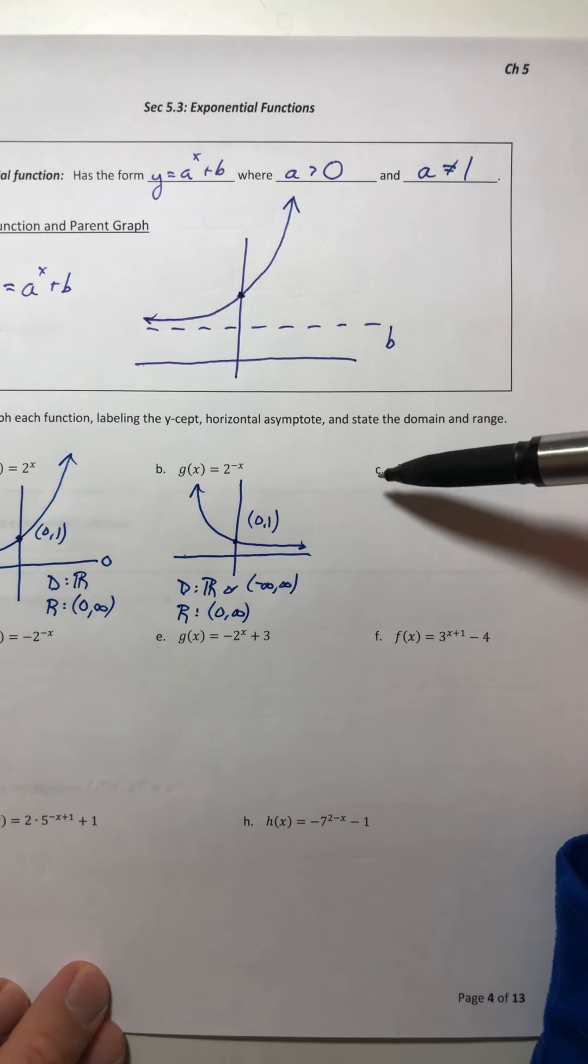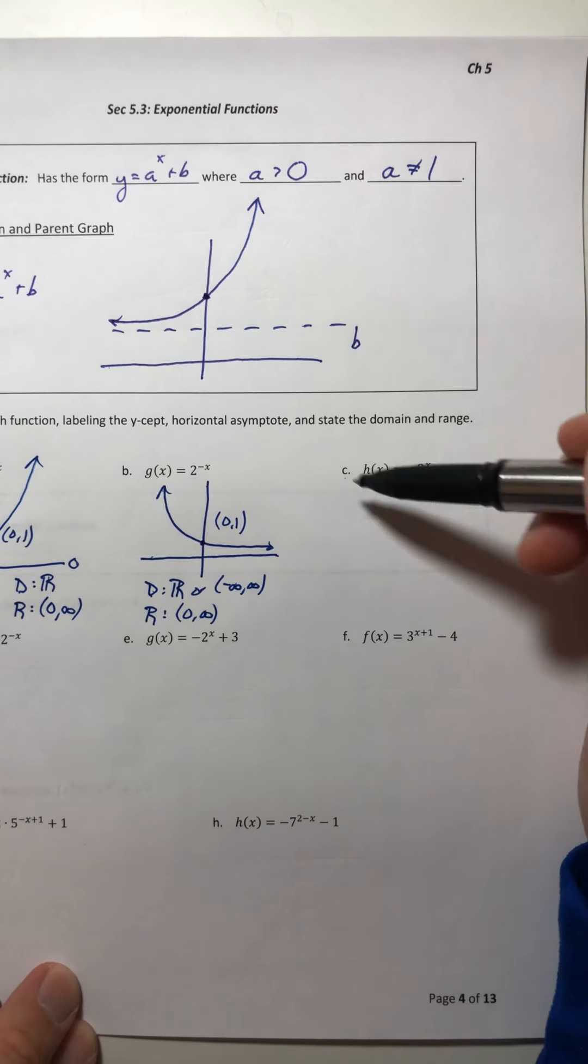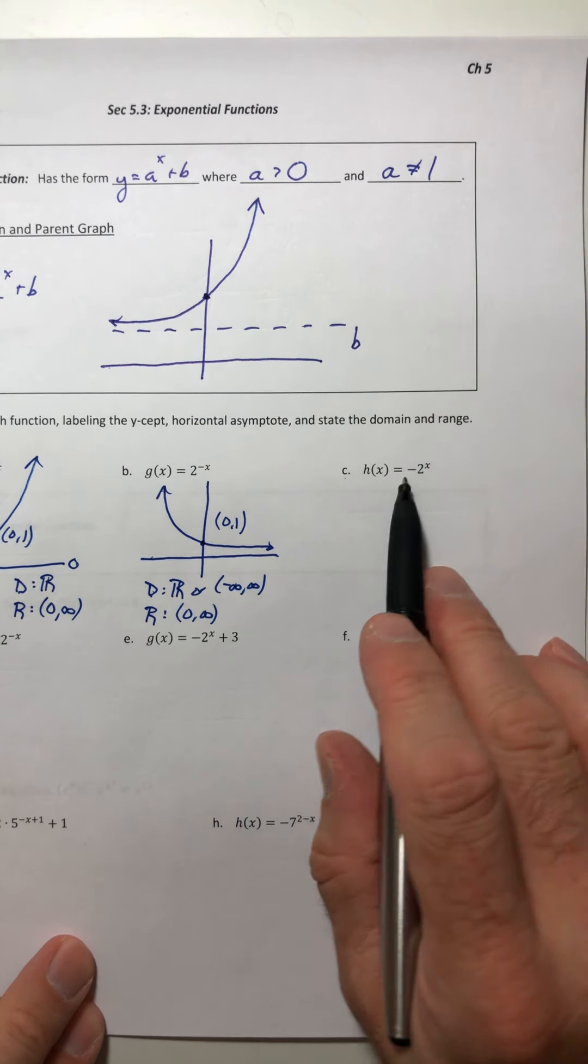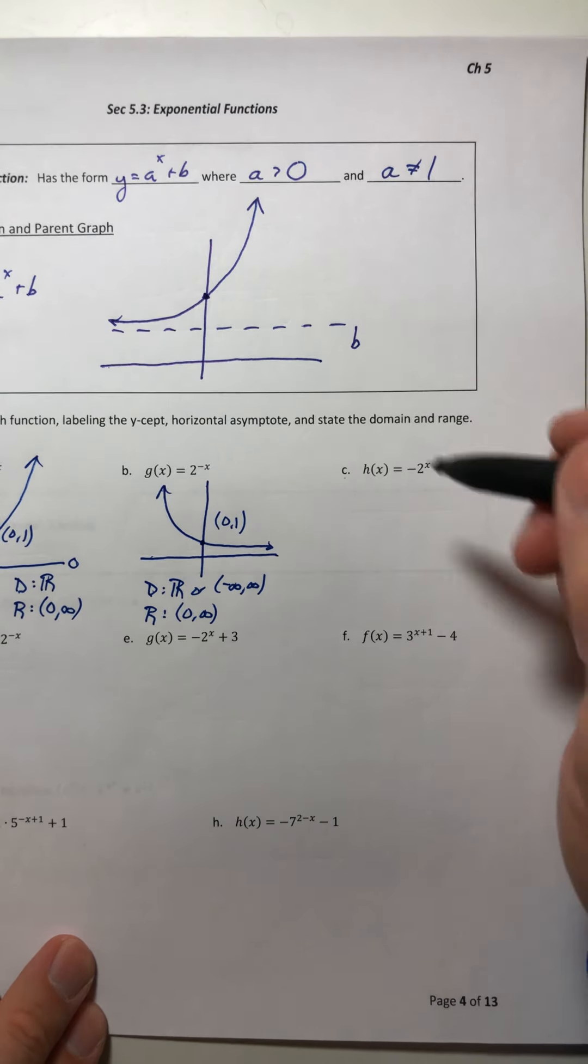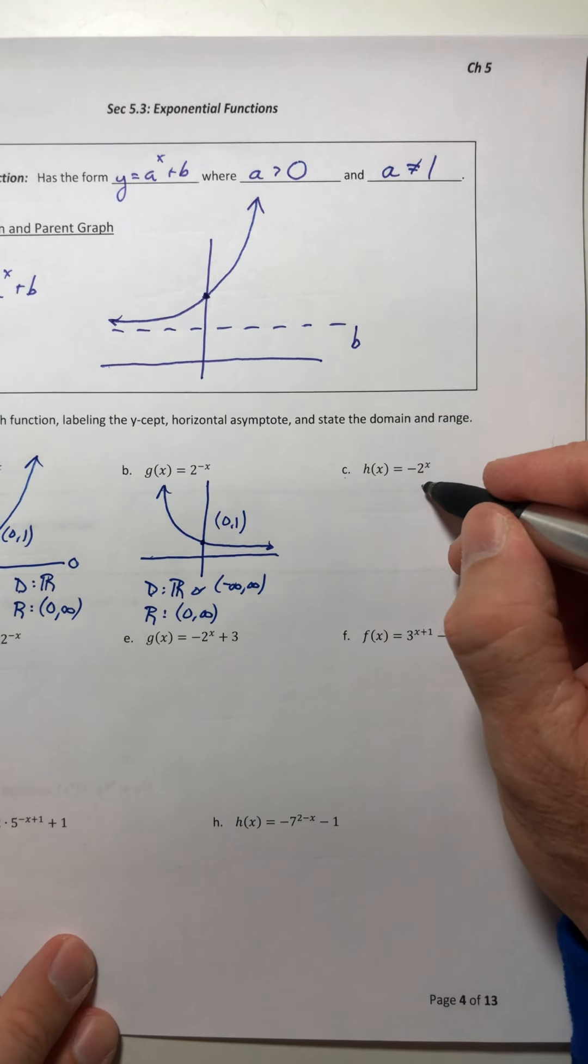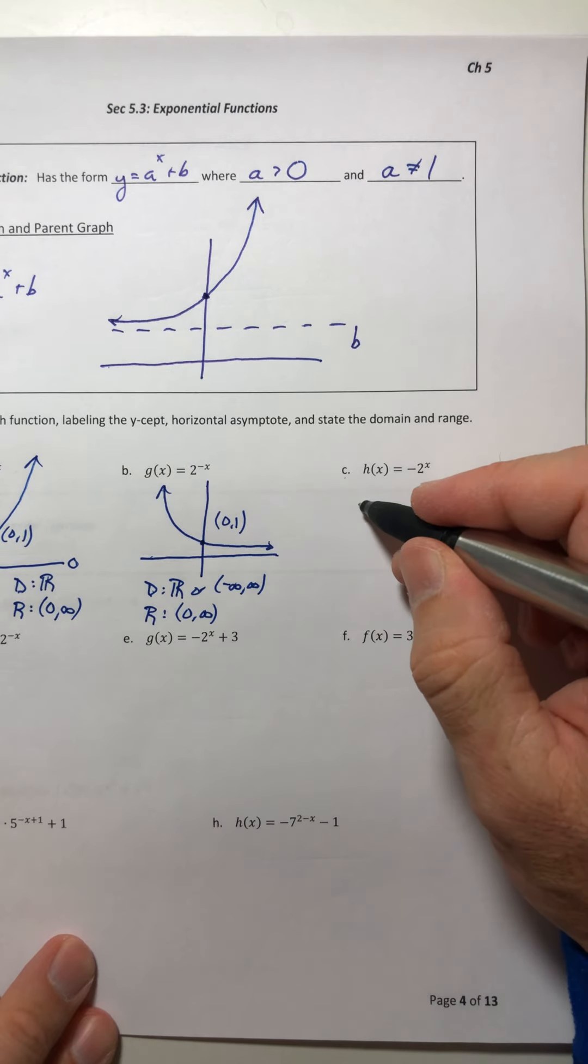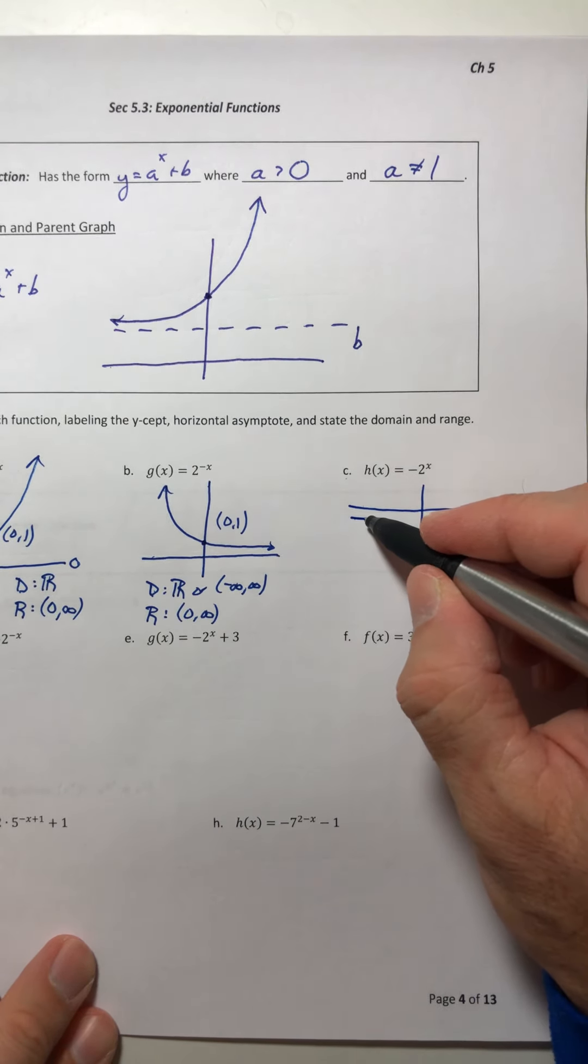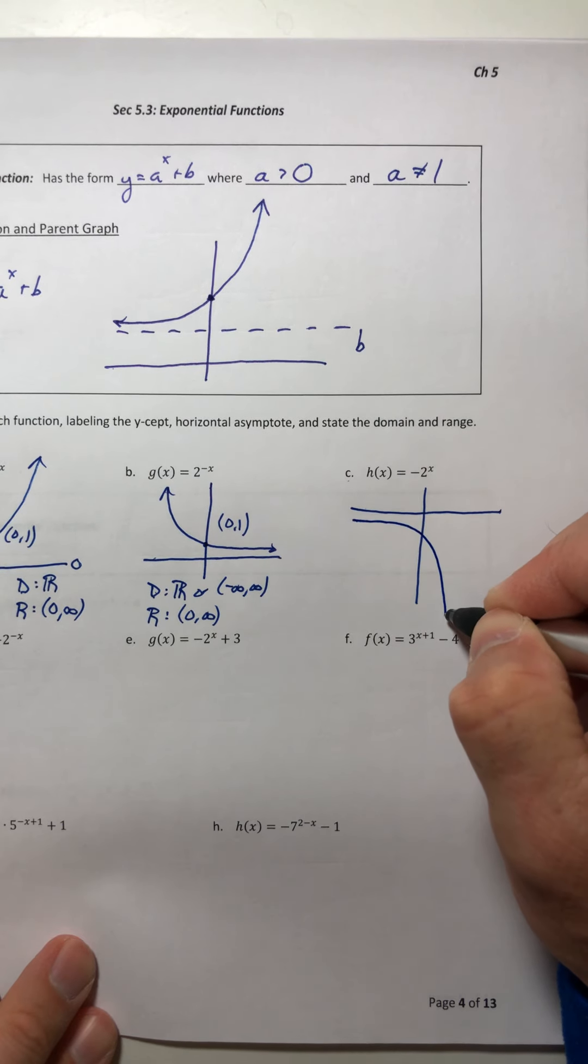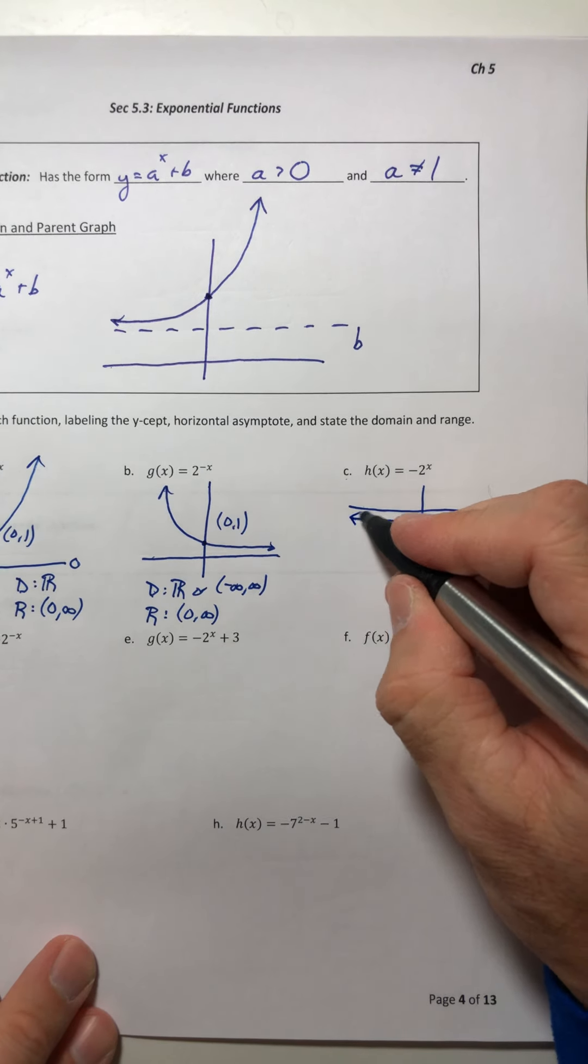Let's do c and d and then we'll take a break from the video. Now you have a negative sitting in front of the base, in front of the 2. When the negative is out in front of everything, it flips it upside down. So it's still flat on the left but now it's going down on the right side.